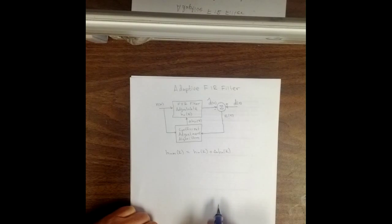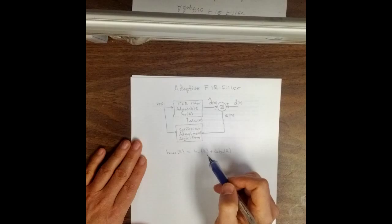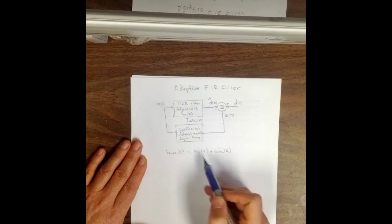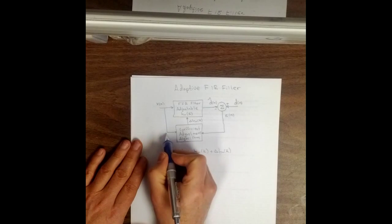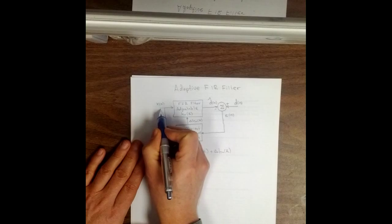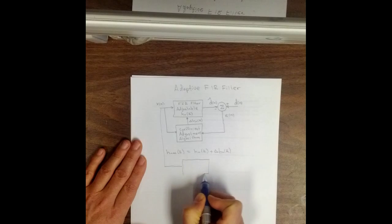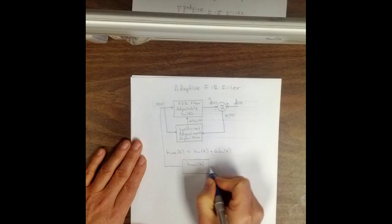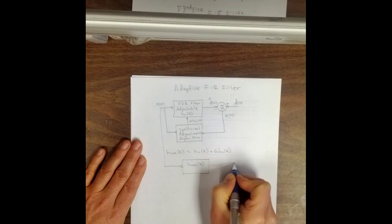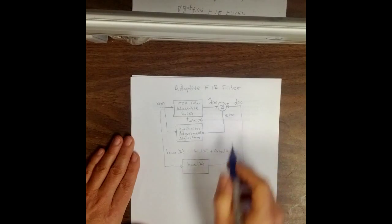Now as an application of this, we could make an adaptive FIR filter that will adjust the coefficients here to mimic another filter. So suppose we have another filter here with unknown coefficients. I'm just going to call this filter, it's an FIR filter as well, h unknown of k. Those are the coefficients for this unknown filter. And if we run that filter into this desired output d of n,